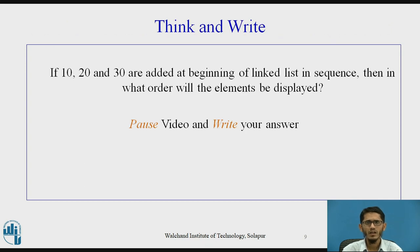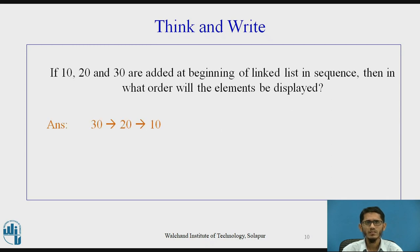Now we have a question for students. If elements 10, 20, and 30 are added at the beginning of a linked list in that sequence, in what order will they be displayed? The answer is: 10 is added first, then 20 is added before 10, then 30 is added before 20. So the elements will be displayed in the order 30, 20, 10.